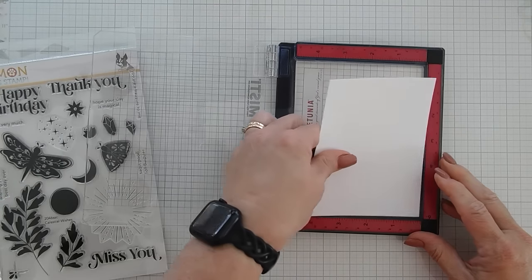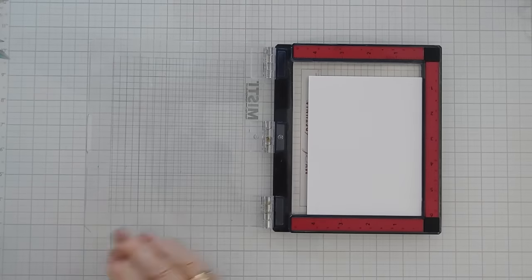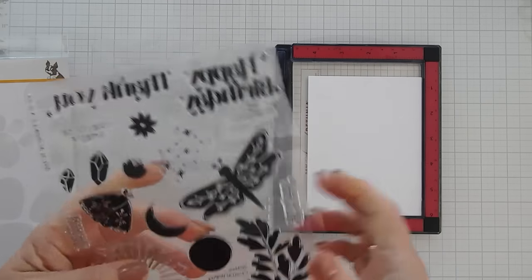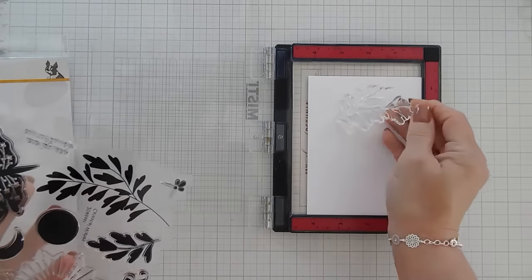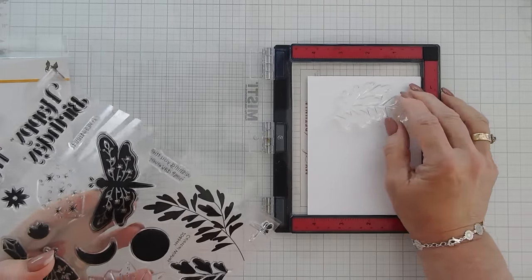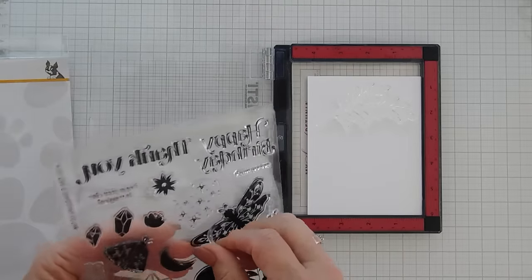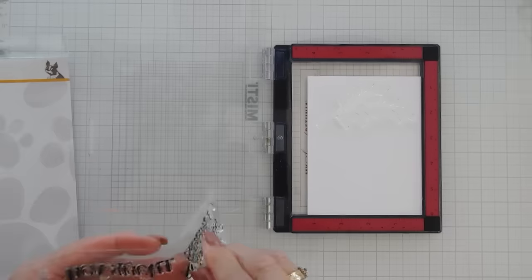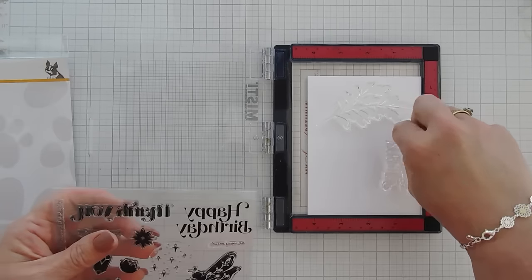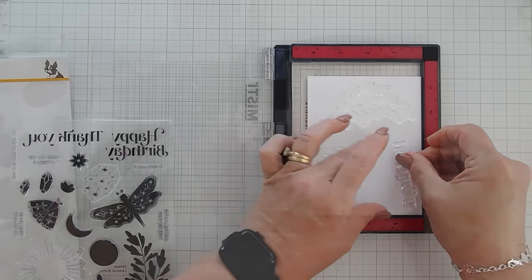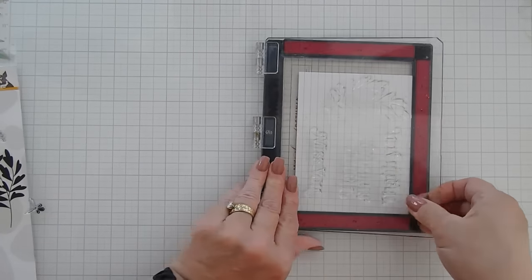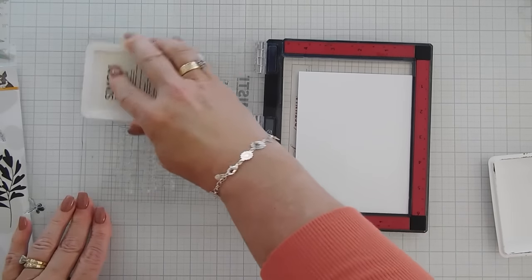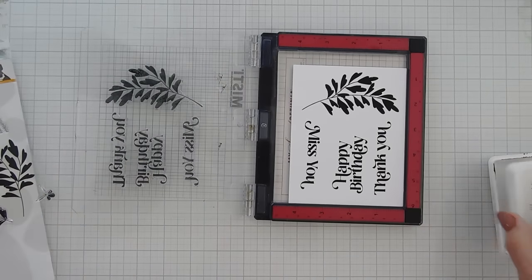We're going to do stamping first. So first we're going to put in an A2 panel that I created. Actually, this is the Neenah cardstock. And we're going to stamp this beautiful, we're going to do all of our stamping at once here. And this is really pretty too. Let's do our greetings. We're going to stamp all of these bigger greetings. I might need to bring in another piece of cardstock. I'm going to stamp with my intense black ink.